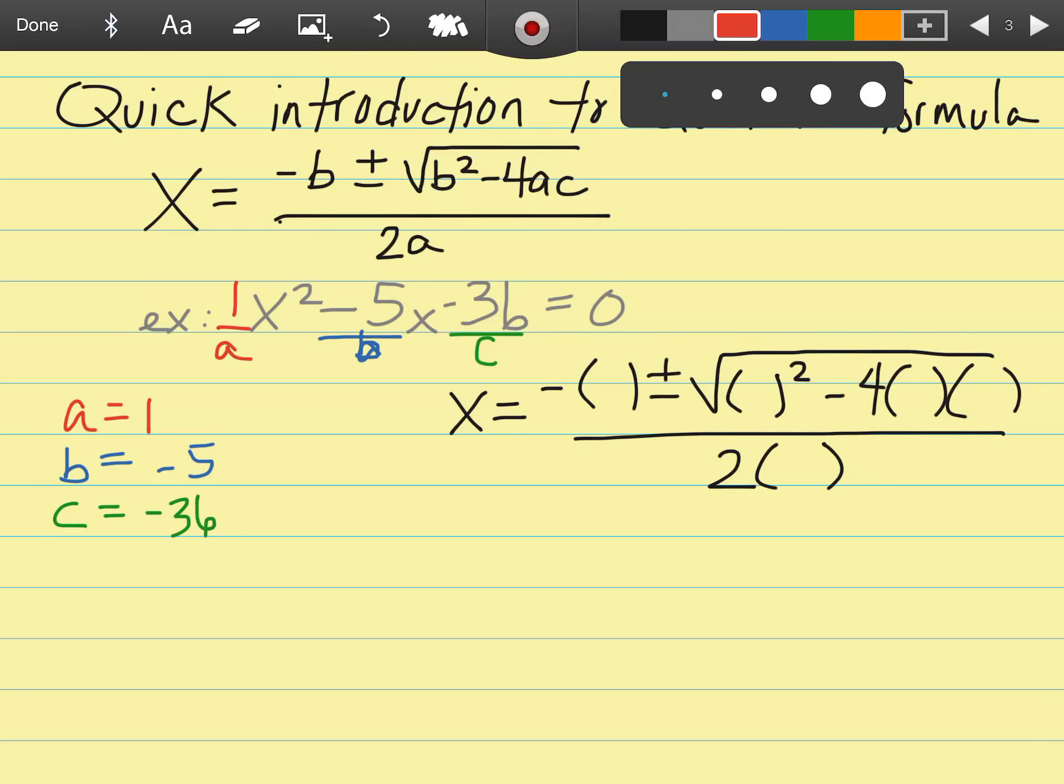I am going to take these three numbers now and put them in the formula in the places of the letters. Starting with the a, I see two a's, so I'm going to put a one in both spots. Now I'm going to plug in the negative five for both of these b's, and then the c is just right there in that one place and it's a negative 36. So far there's nothing hard about this.